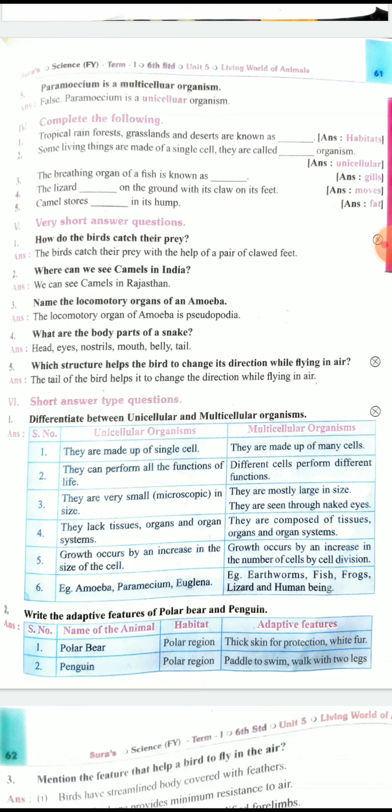Next fourth pattern: Complete the following. Tropical rainforests, grasslands and deserts are known as habitats. H-A-B-I-T-A-T-S. Second question: Some living things are made up of single cell. They are called unicellular organism. U-N-I-C-E-L-L-U-L-A-R. Third one: The breathing organ of a fish is known as gills. G-I-L-L-S. Fourth one: The lizard moves on the ground with its claw on his feet. M-O-V-E-S. Fifth one: Camel stores fat in its hump. F-A-T. Are you understood children? Yes.